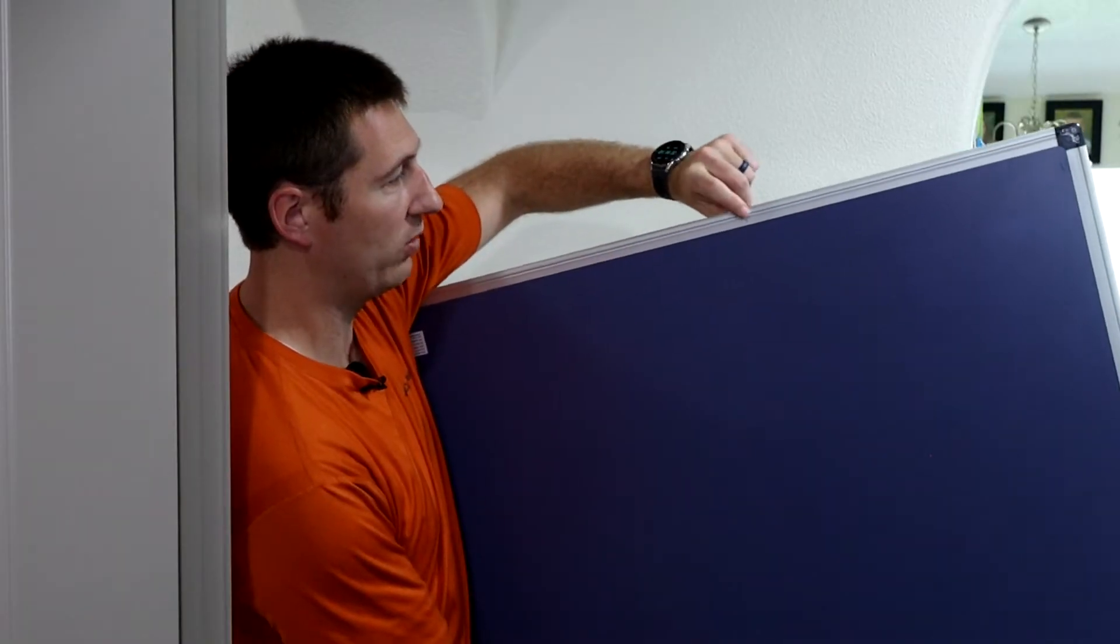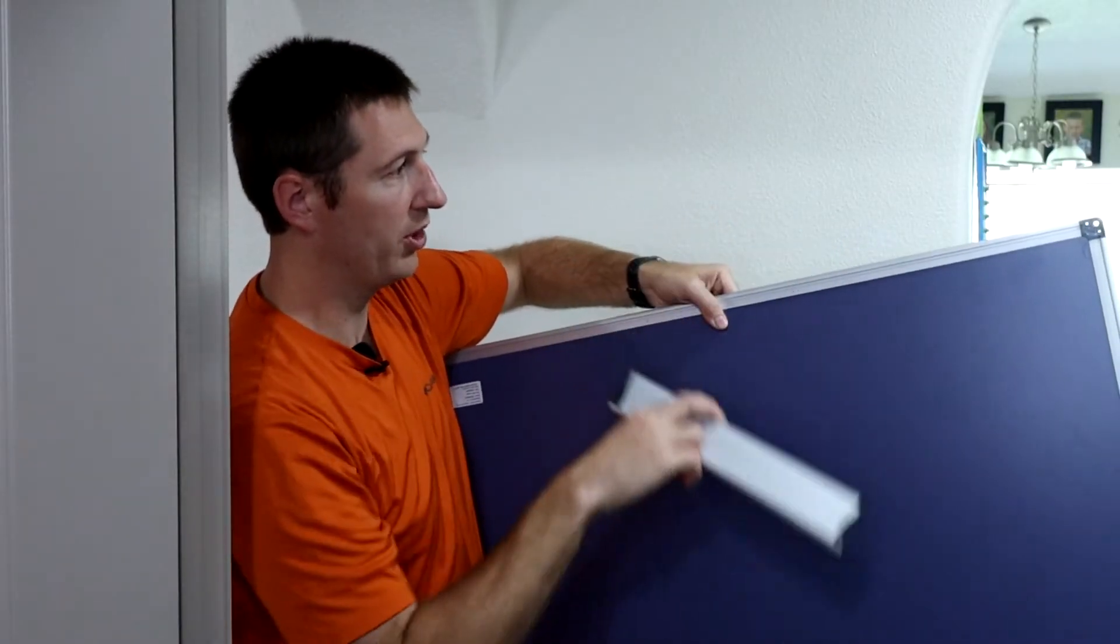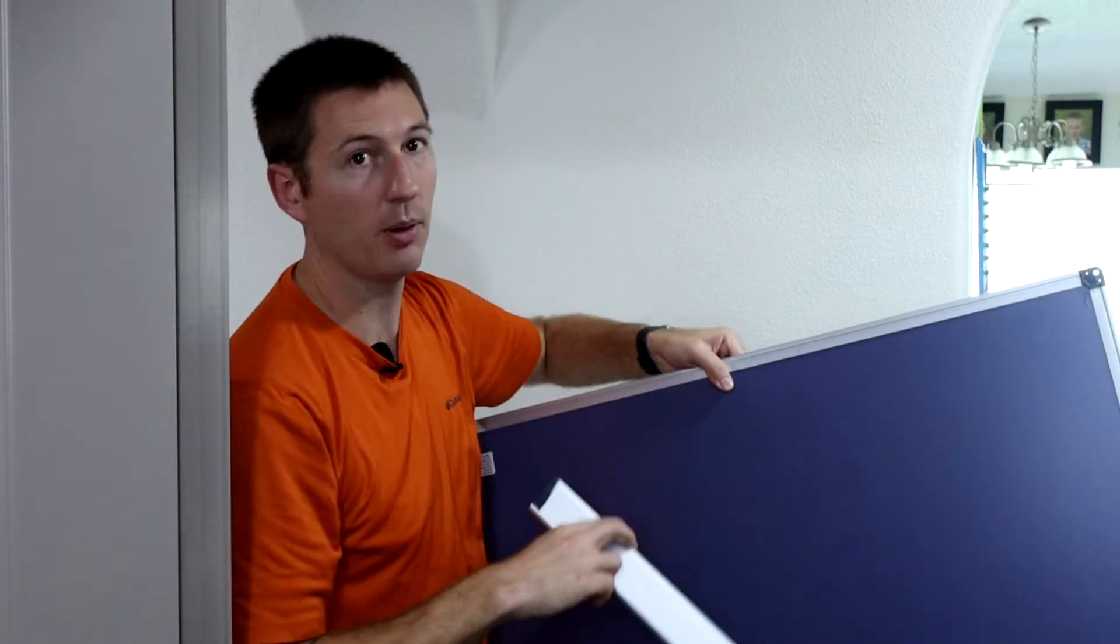that you find where the holes are already pre-drilled through the aluminum and that's where this is going to install. So before you put this on the wall you're going to want to install this first. So we'll start with that.